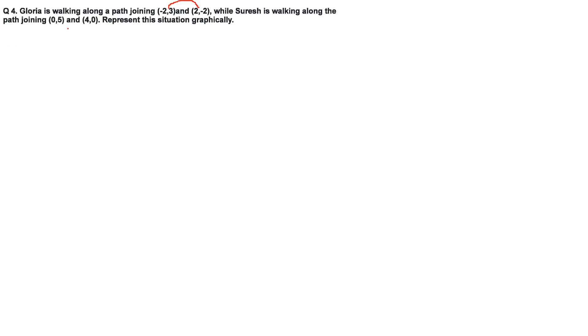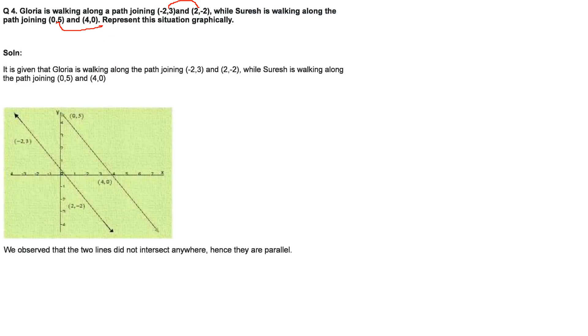Gloria walks along the path joining (−2, 3) and (2, −2), while Suresh walks along the path joining (0, 5) and (4, 0). Plot the point (−2, 3): X = −2, Y = 3. Then (2, −2): X = 2, Y = −2. Draw a line through them. For Suresh: plot (0, 5) on the Y-axis and (4, 0) on the X-axis. Draw that line. You will see the two lines are parallel.